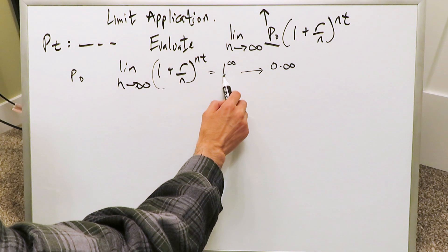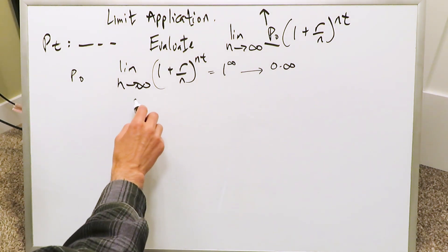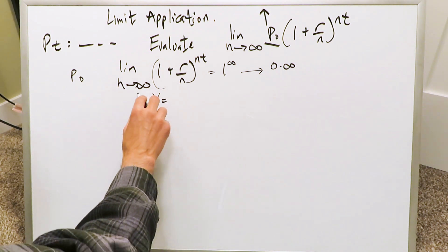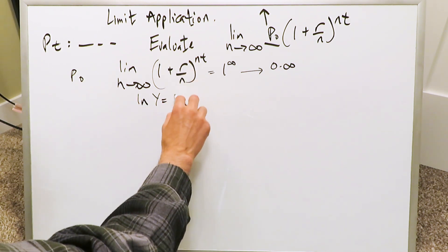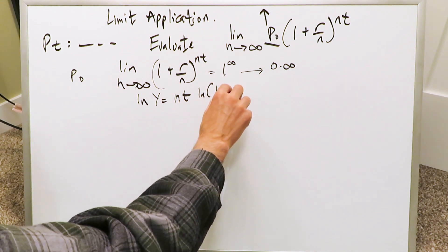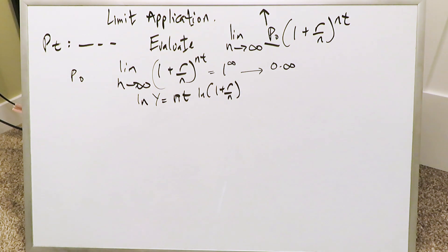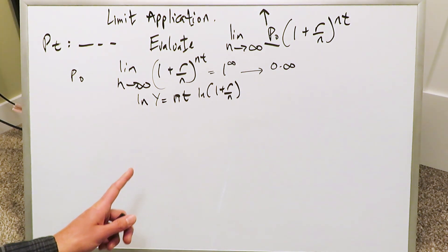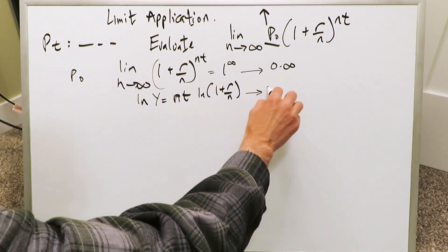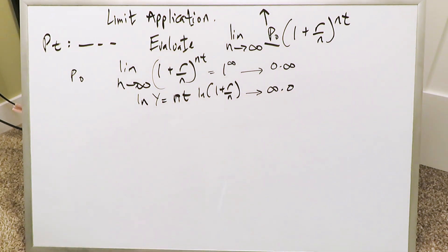You can convert an indeterminate power type into a product type by bringing in the natural log. Imagine all of this is equal to y, then you take natural log of y, and you can bring down the exponent: nt · ln(1 + r/n). If you evaluate this with regards to infinity, you end up with infinity times zero — an indeterminate product type.